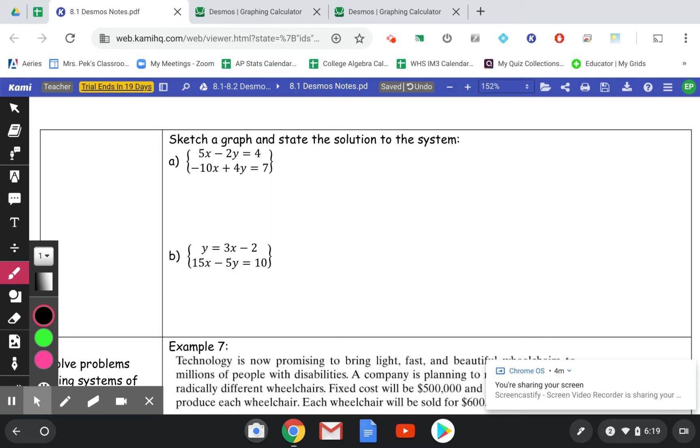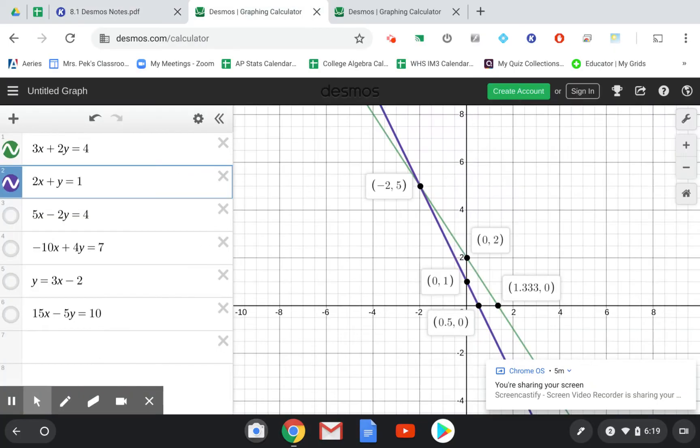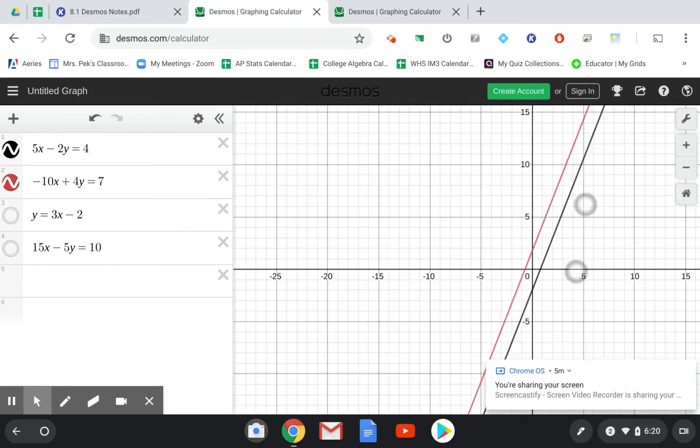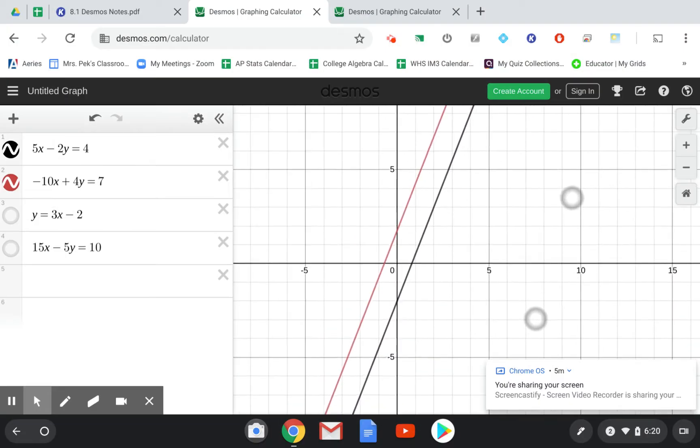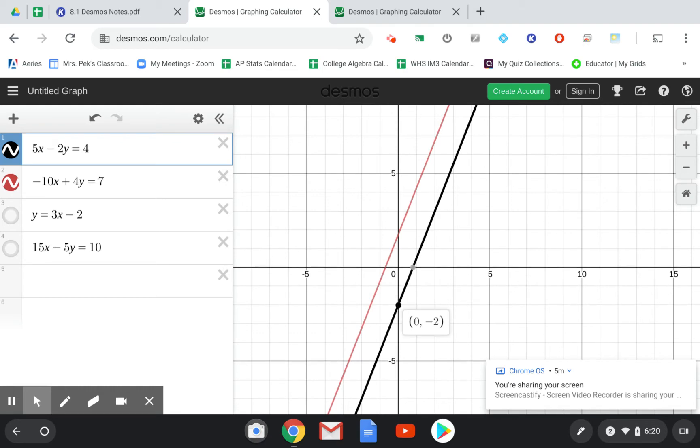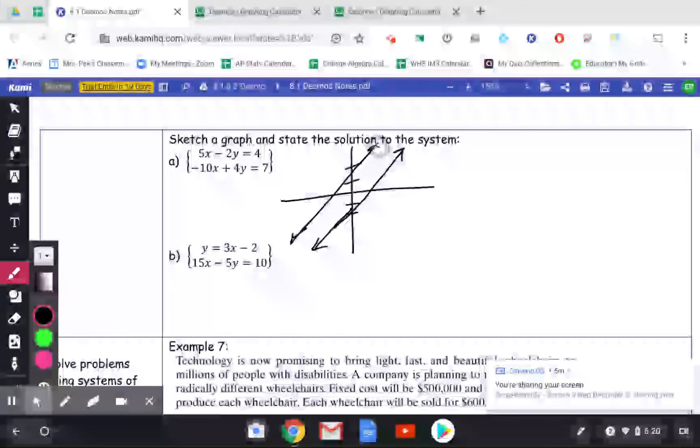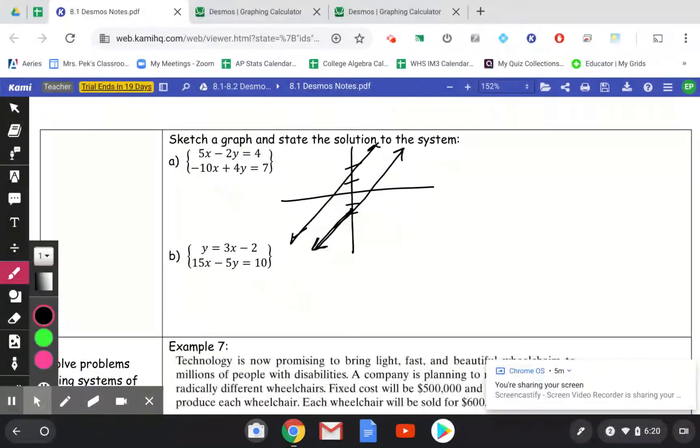So again, we want to sketch the graph and then state the solution. So my next two lines here, 5x minus 2y equals 4. Here's this one and -10x plus 4y equals 7. So you can see that these are two nice parallel lines. They, you can zoom out as much as you want. It doesn't matter. They will never cross. I can put one at -2 and one's like almost at 2 there. So I'm going to sketch that. One goes through -2. And one goes through almost 2. And then just make sure they look parallel there. It doesn't have to be perfect. And then you state that there is no solution because they're parallel. They never cross. And a solution is where the lines cross each other.